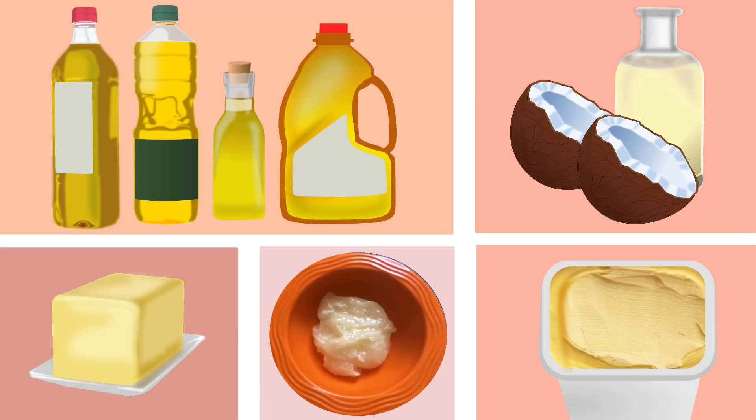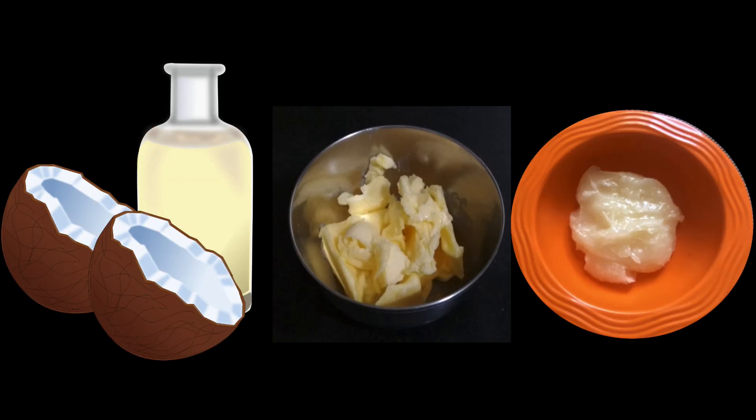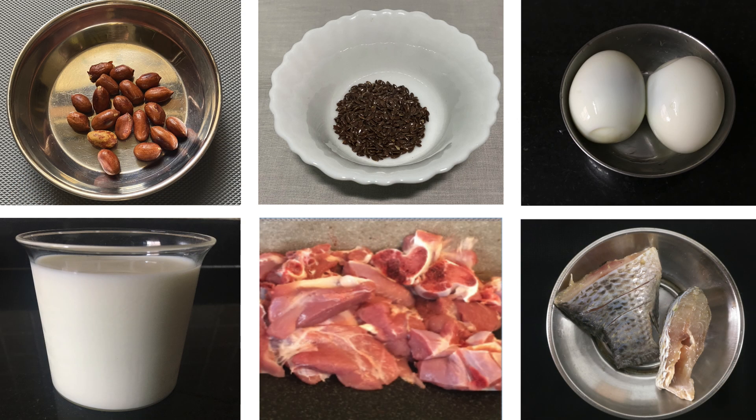Visible fats are the ones we can see. Oils, butter and ghee are a few examples. Invisible fats are those which we cannot see. These fats are naturally present in foods such as nuts, seeds, eggs, milk, meat and fish.